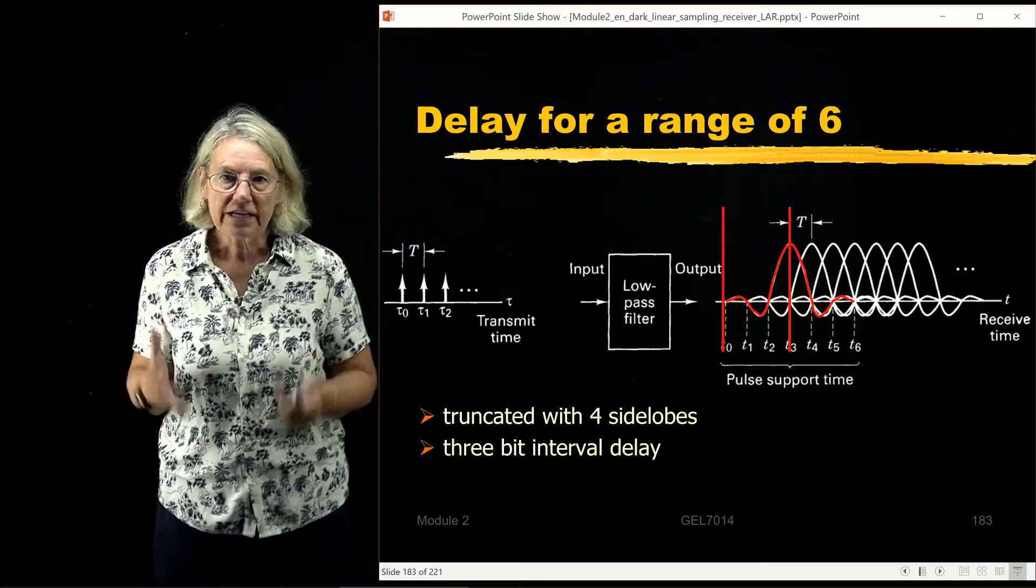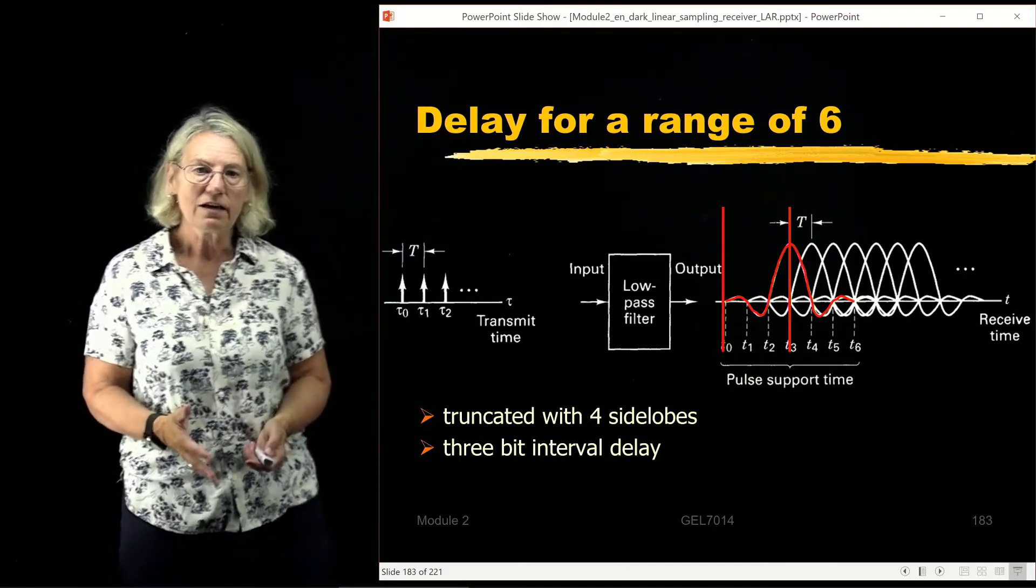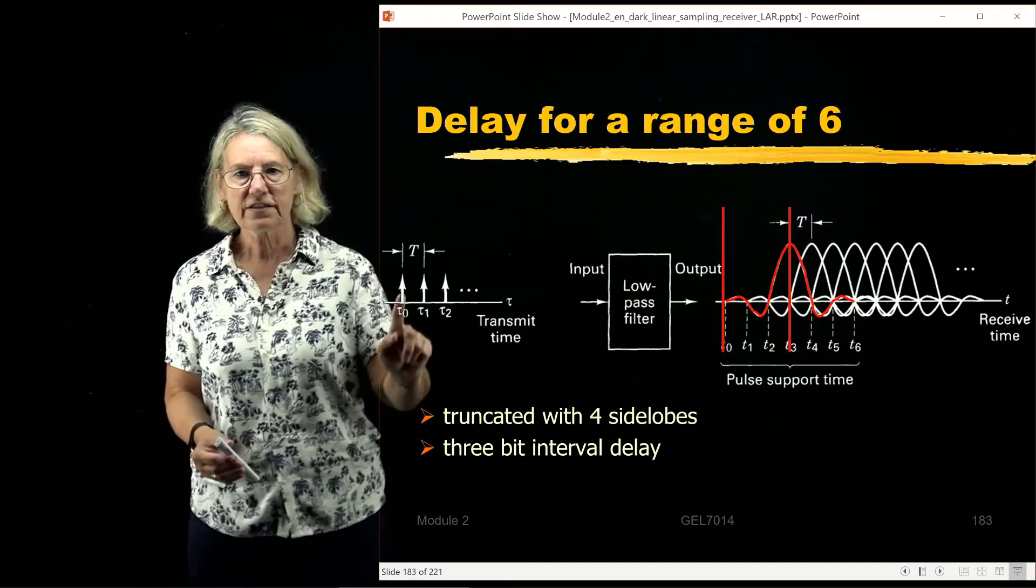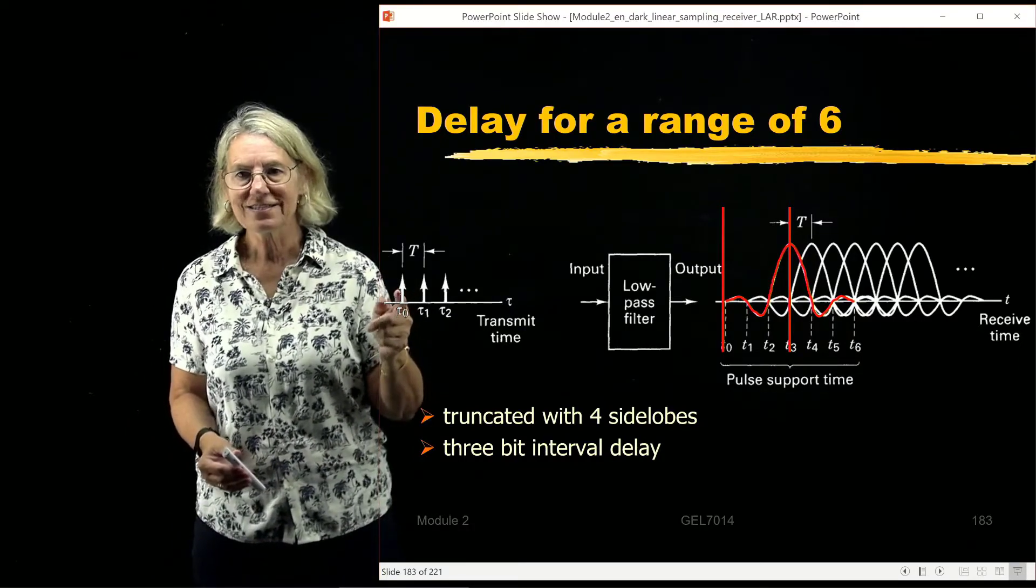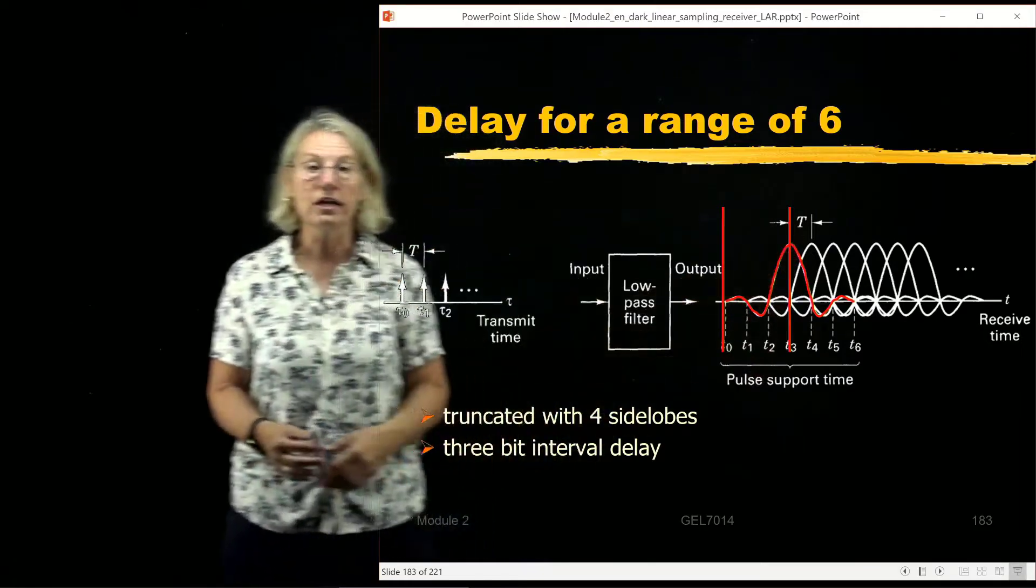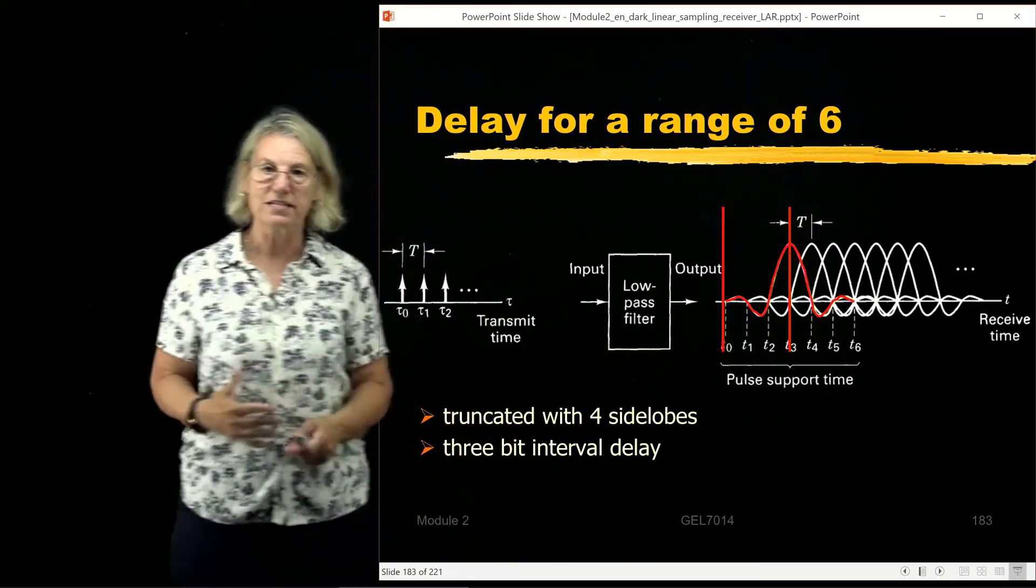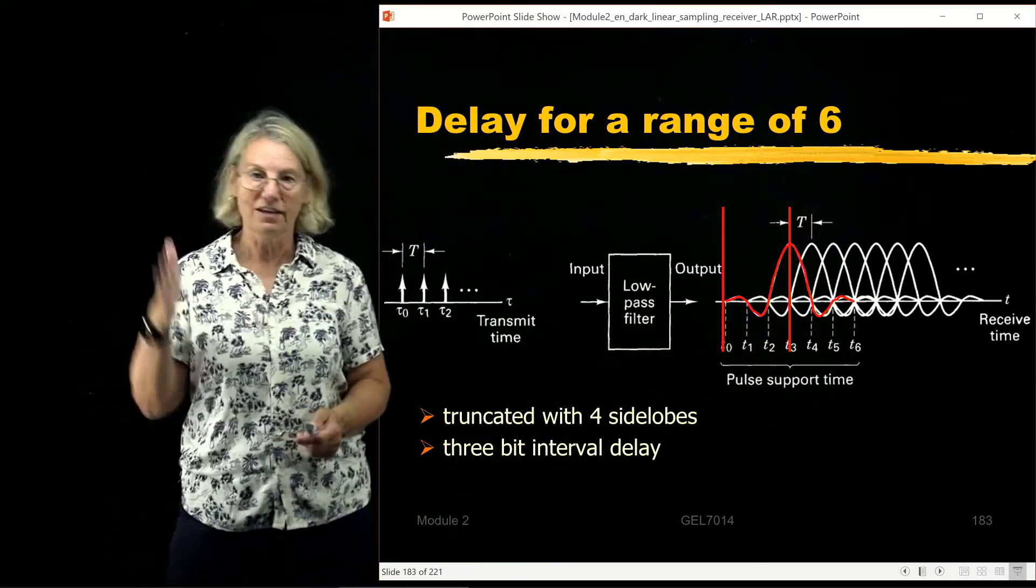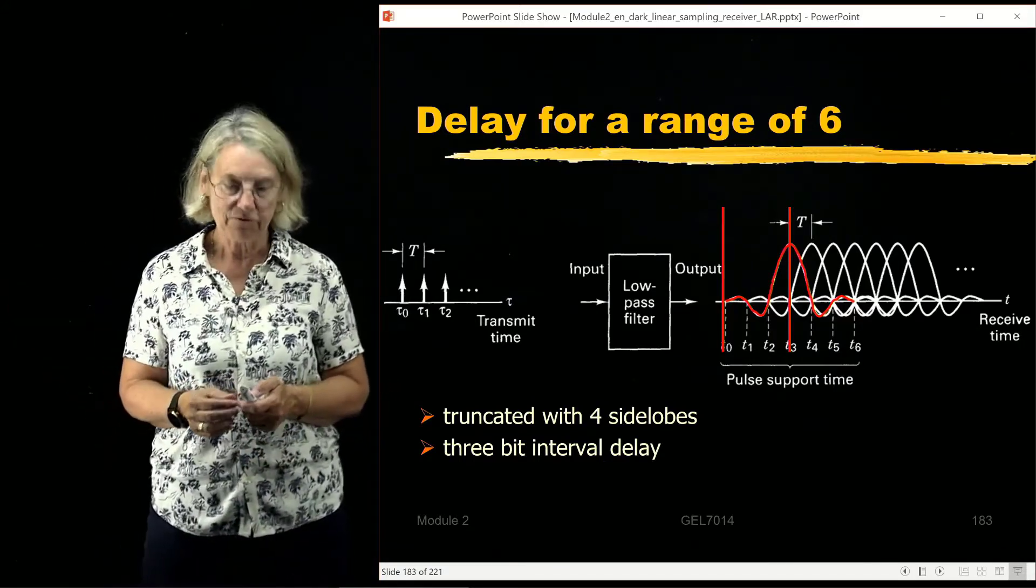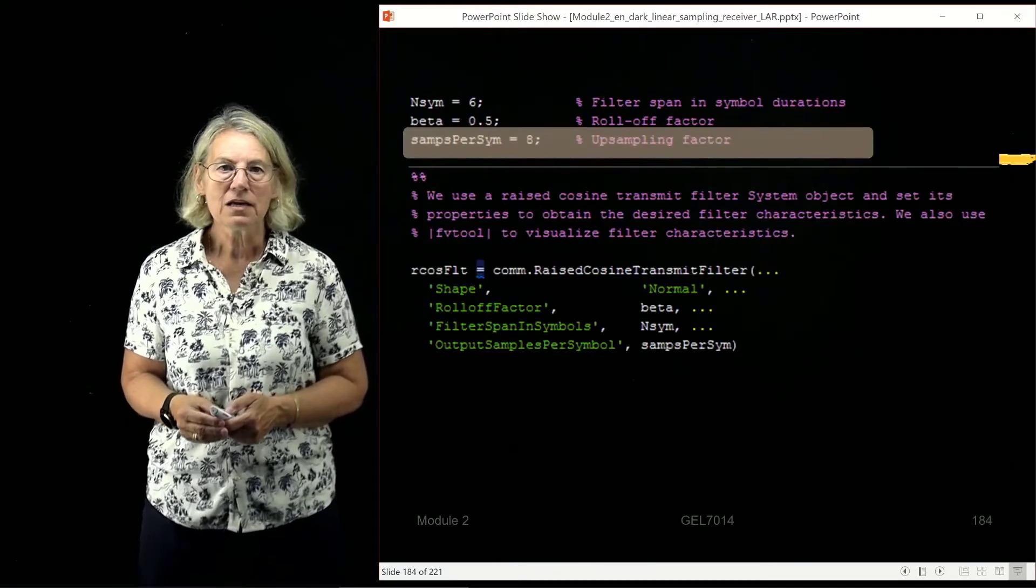That means that we are introducing a delay of three bit intervals because if I look at the time when this bit zero enters into the system, it's actually coming out at time three by the time it's been delayed by waiting to give it a two preceding the side lobes before the main lobe.